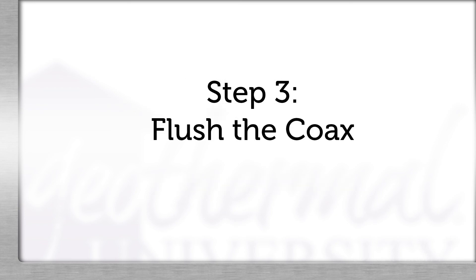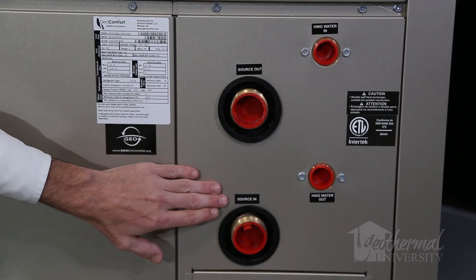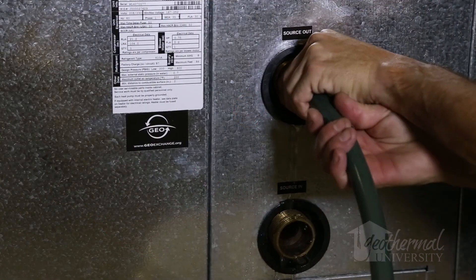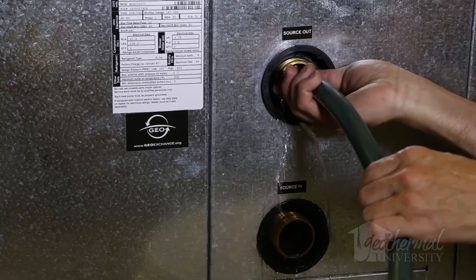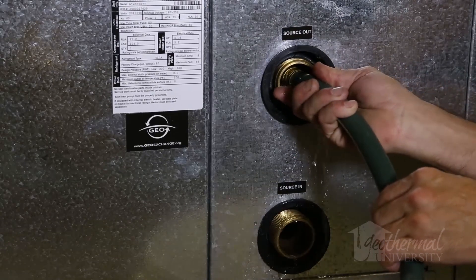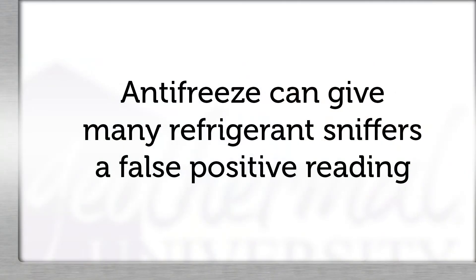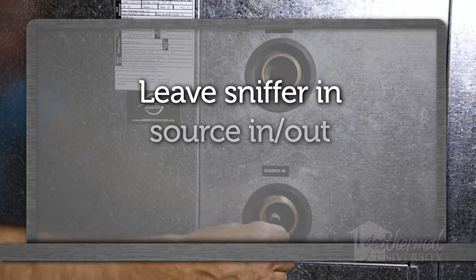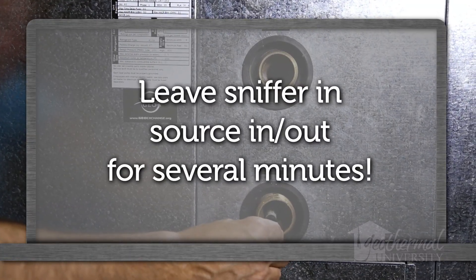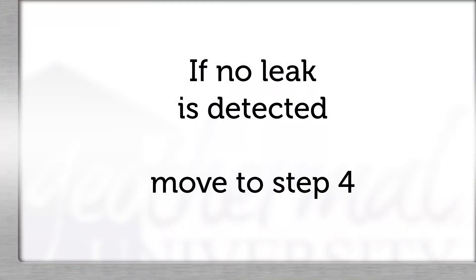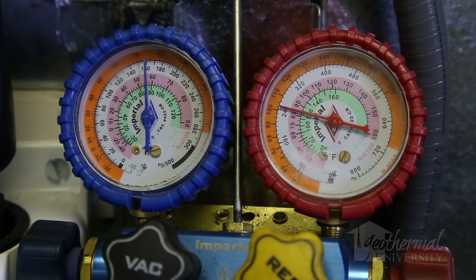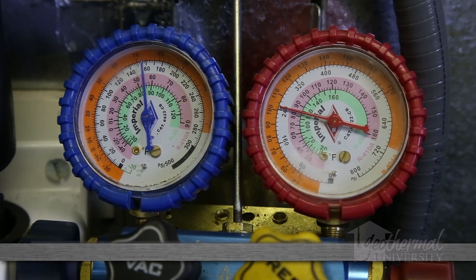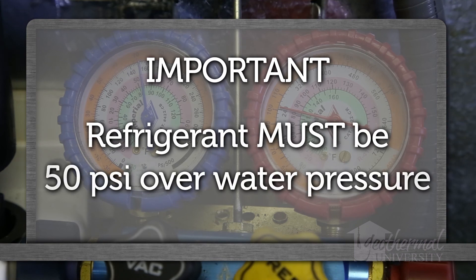Step three: disconnect the water in and out connections on the unit. You'll need to thoroughly flush the water in and out with tap water to make sure there is no antifreeze present in the coax and water circuit. Note that antifreeze can give many refrigerant sniffers a false positive reading. Since there is a trace amount of refrigerant in the system, using a refrigerant sniffer, insert the wand into the water outlet port and test for a refrigerant leak. If no leak is detected, move on to step four. Care must be taken so water is not introduced into the refrigerant circuit. Refrigerant pressures must be at least 50 PSI over water pressure. Always depressurize the water circuit and isolate the loop in advance of reclaiming refrigerant.